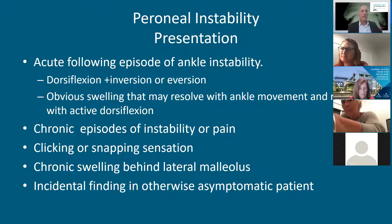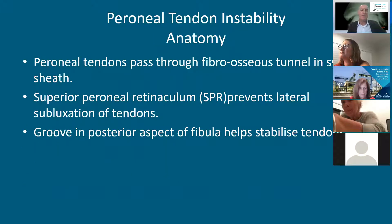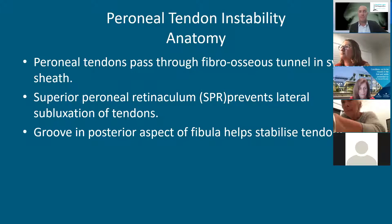It can be recognized with chronic episodes of pain, a clicking or snapping sensation, or just chronic swelling. Occasionally it's an incidental finding in an otherwise asymptomatic patient, which presents a dilemma about whether to treat it. The peroneal tendon passes through a fibroosseous tunnel — quite strong, you really need to cut it with a knife to access the peroneal tendons. The superior peroneal retinaculum, a Y-shaped structure, stops subluxation as the tendon passes behind the fibula.